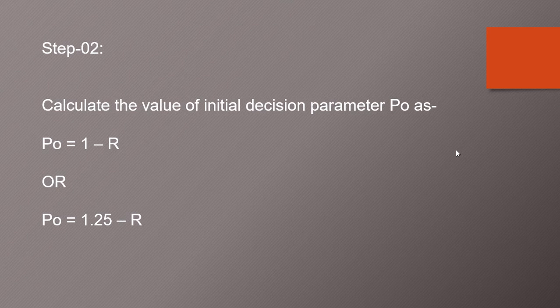Now the next step is we need to calculate our decision parameter. So P0 is our initial decision parameter and it can be calculated with the help of P0 is equal to 1 minus R. Or we can say P0 is equal to 1.25 minus R. When you will round off that 1.25 value it will be 1. So that's why you can use any formula for calculating decision parameter from this both.